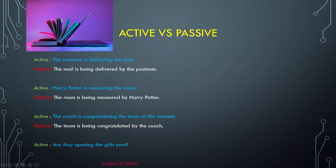Active question: 'Are they opening the gifts now?' — 'are' is our to-be verb, 'they' is our subject, and 'opening' is our verb. The passive form is: 'Are the gifts being opened by them?' — 'are' is our to-be verb, 'the gifts' is our object, and 'opened' is the past participle of 'open.'